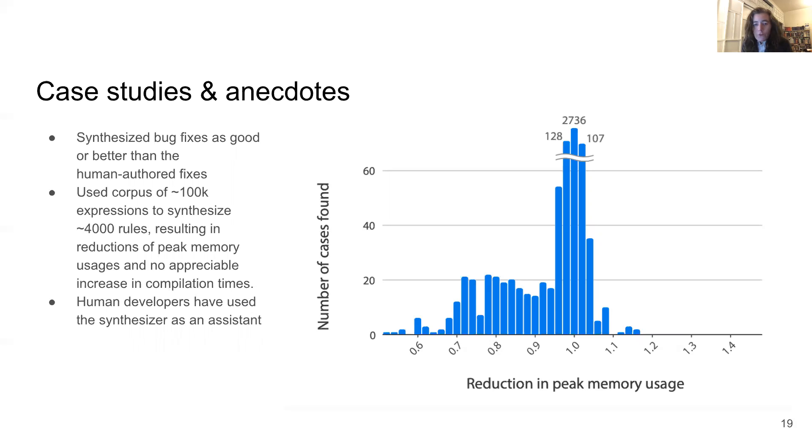To call back to the theme of using formal methods to support developers, we had some observations about Halide developers using the synthesizer as an assistant. In one case, the developer was looking at an expression that he thought should simplify, but it currently wasn't. Rather than write a rule by hand, he actually searched through the set of rules we'd synthesized in our big experiment, and found a rule that did what he wanted. In another case, a developer hand wrote 24 new rules. But then he fed their left hand sides into the synthesizer, and essentially resynthesized them. This was a means of letting the synthesizer check his work. We found these anecdotes of human-synthesizer collaboration to be very encouraging.